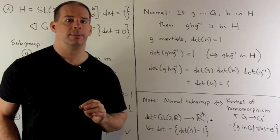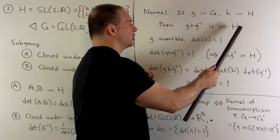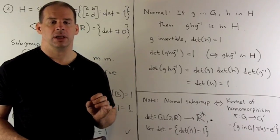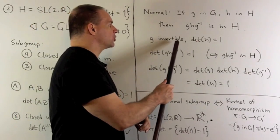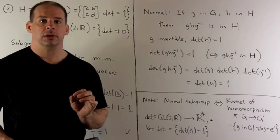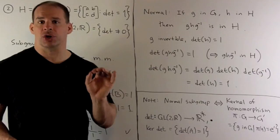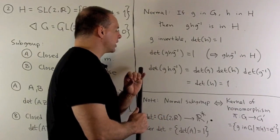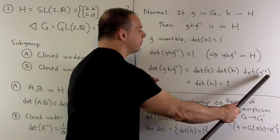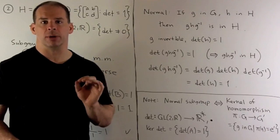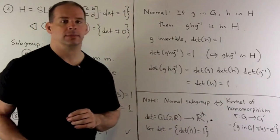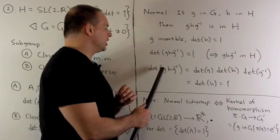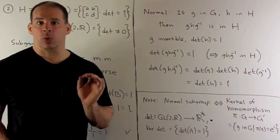To show the normal subgroup property, we pick G in our group G, H in our subgroup H. We compute GHG inverse. We want to show that that's in our subgroup H. Now, in our case, G is going to be an invertible matrix. H is going to have determinant equal to one. I want to compute GHG inverse and show that its determinant is also equal to one, so it winds up in SL(2,R). Now, we compute. Well, my product rule says I can pull this apart. And then I note determinant of G inverse is equal to one over determinant of G. So the first and third terms cancel. That leaves me with determinant of H. By assumption, that's equal to one. So that means GHG inverse is in H, so H is going to be a normal subgroup in G.